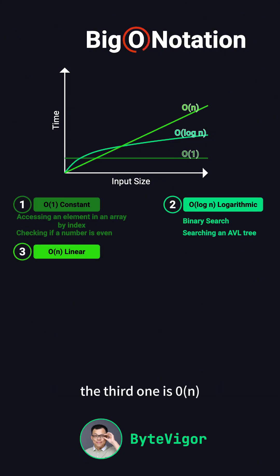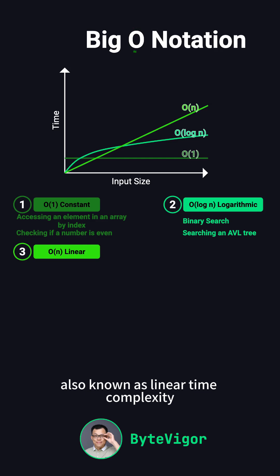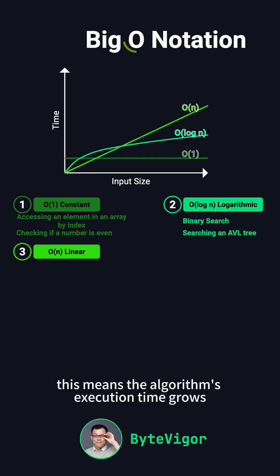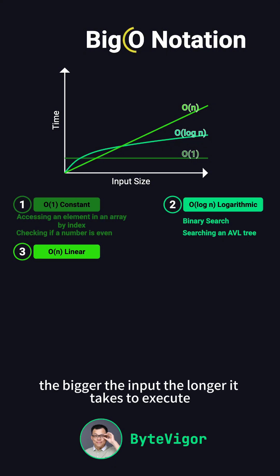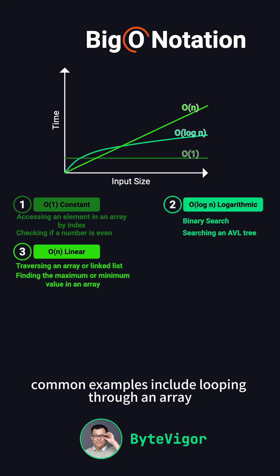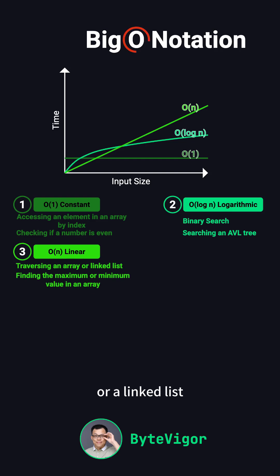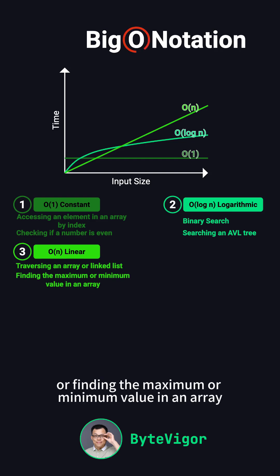The third one is O(n), also known as linear time complexity. This means the algorithm's execution time grows directly with the size of the input — the bigger the input, the longer it takes to execute. Common examples include looping through an array or a linked list, or finding the maximum or minimum value in an array.